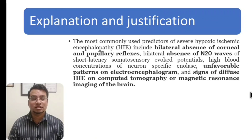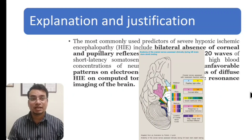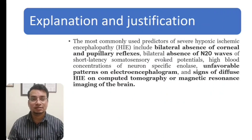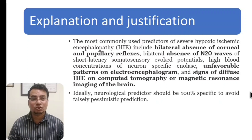MRI of brain shows hyperintense areas on diffusion-weighted imaging which can assist with prognosis — this is the most accurate statement. The most commonly used predictors of severe hypoxic encephalopathy include bilateral absence of corneal and pupillary reflexes, which are brainstem reflexes, bilateral absence of N20 waves of short-latency SSEPs (somatosensory evoked potentials), high blood concentration of NSE (neuron-specific enolase), unfavorable patterns on EEG, and signs of diffuse HIE on CT or MRI of the brain.